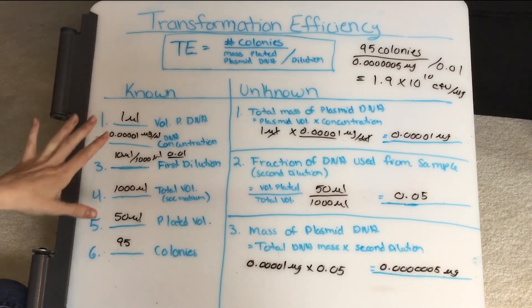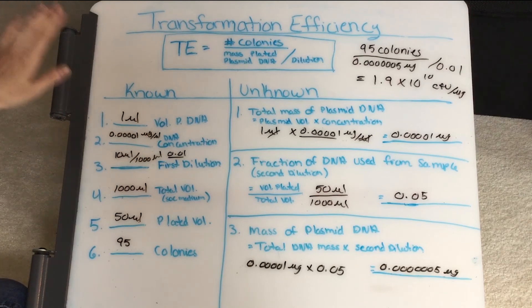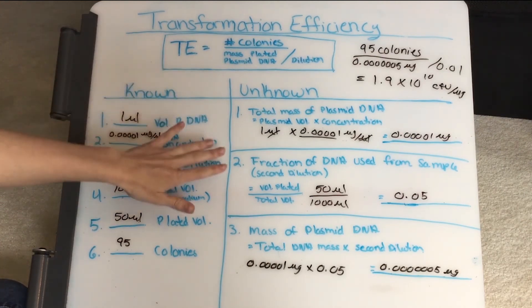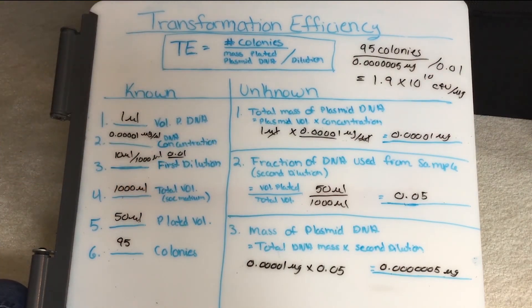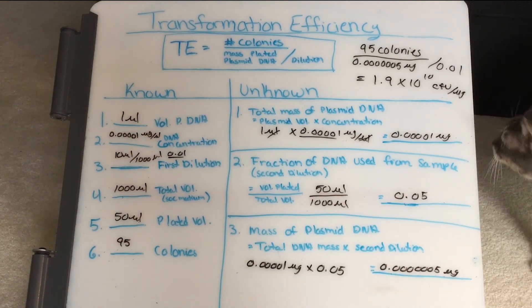So that's it. Ultimately, when you're learning this, you're going to take what you know and use it to solve for what you don't know, and then you just plug in the numbers. But if you don't feel like doing all that math, GoldBio does have a transformation efficiency calculator on our website. All you have to do is check it out at goldbio.com.